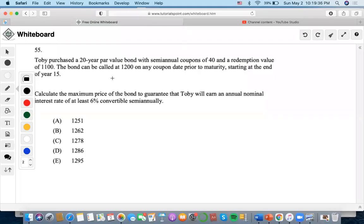Okay, so for this problem, Toby purchased a 20-year par value bond with semi-annual coupons of 40 and a redemption value of $1,100. The bond can be called at $1,200 starting at year 15.